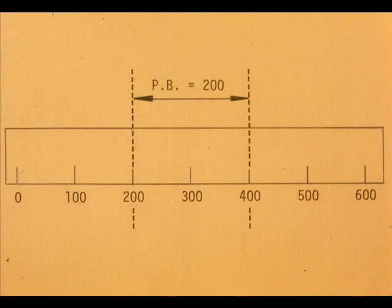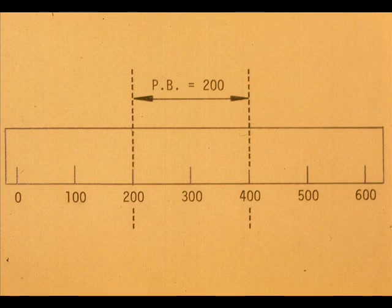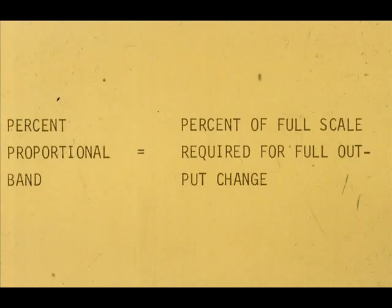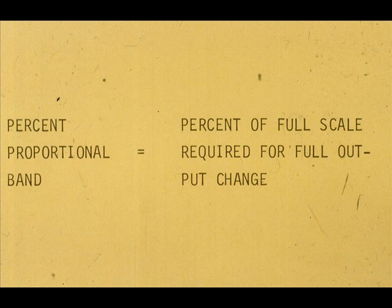What is the percent proportional band here? It is 200 divided by 600, equals 33 and a third percent. Remember, percent proportional band equals the percent of full-scale pen movement it takes to make the controller output change from minimum to maximum, or vice versa.